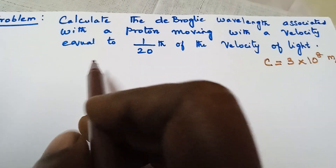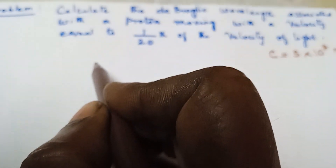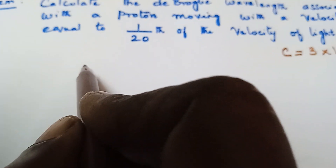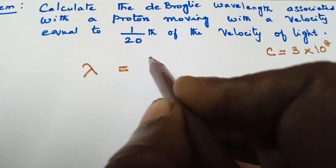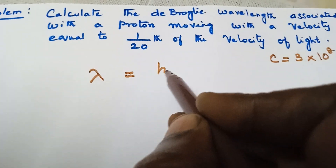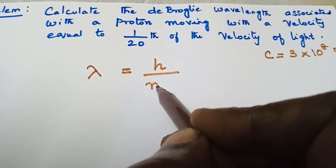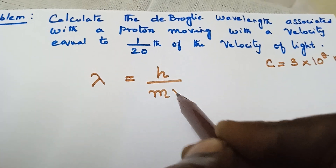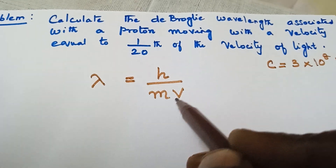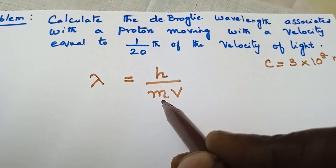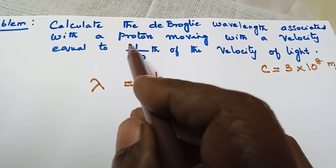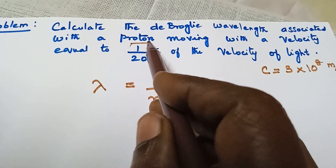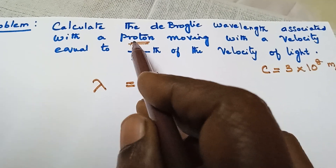We know that the de Broglie wavelength lambda is equal to H — Planck's constant — divided by M into V, where M is given as the proton's mass.